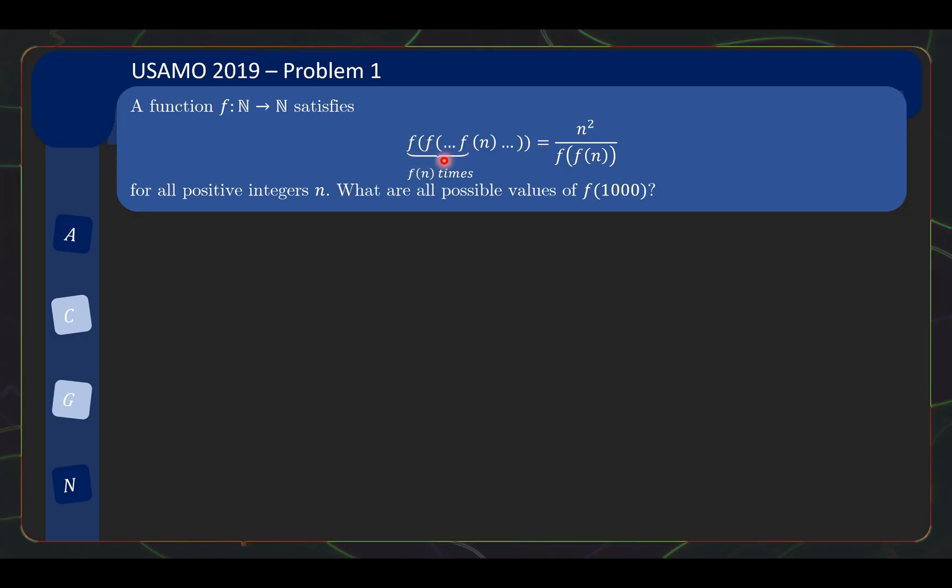You apply f for f(n) number of times, and that is supposed to equal n squared over f(f(n)). Applying an unknown number of times, a variable number of times, that is just difficult to wrap your mind around. This is supposed to hold for all positive integers n, and more interestingly, we are supposed to just find all possible values of f(1000). So it's not finding all feasible fs, it's just finding all possible values of f(1000). There are so many things about this problem that is quite special and different from a standard problem.